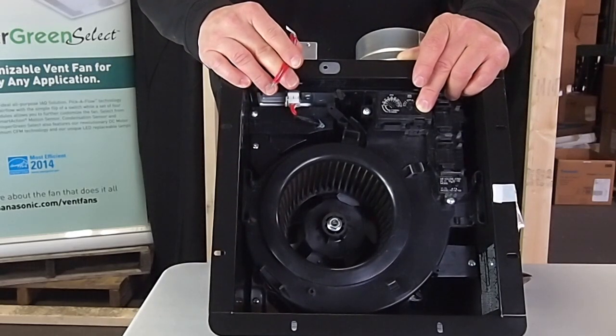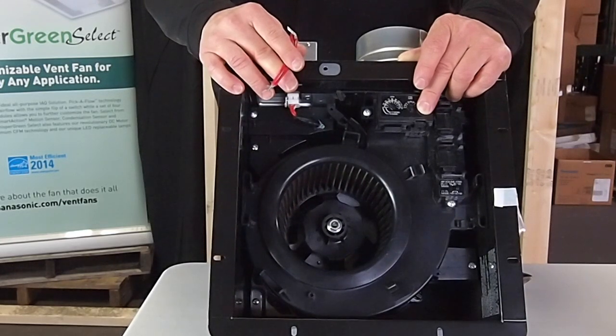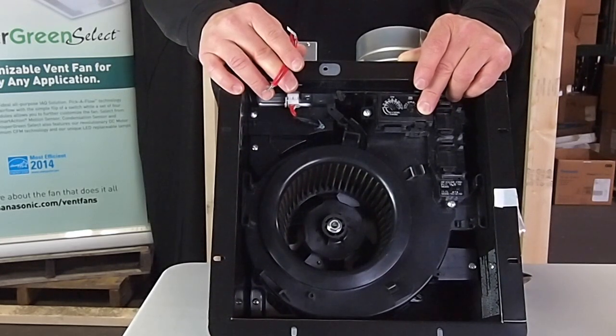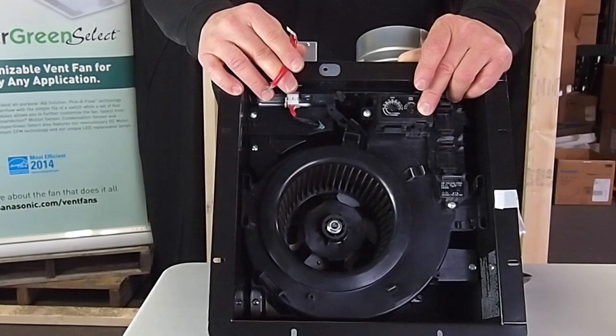We will need constant power at the fan. For constant power, we will find an existing power source in the attic. To use the red signal wires, we will use the existing wire from the switch box to the old fan.